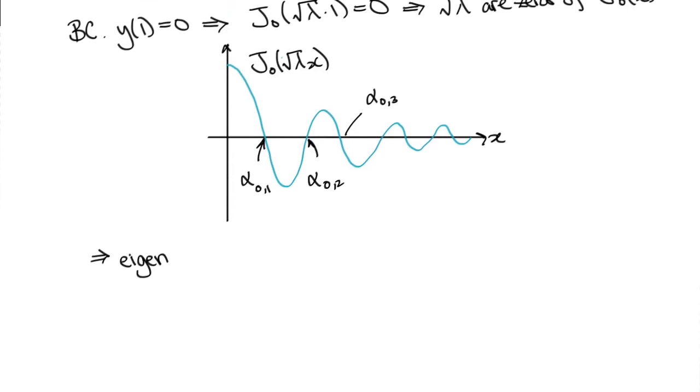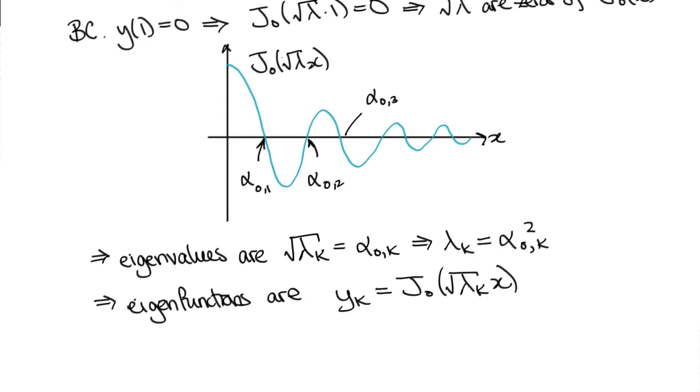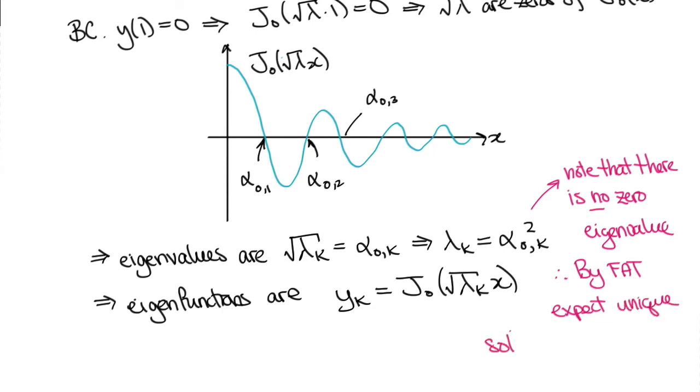Therefore, the answer to the question is that the eigenvalues are given by lambda k equal to alpha 0 k squared, and the eigenfunctions are yk equal to j0 of square root of lambda k times x. We can make one last remark that because the Bessel equation is non-zero at x equal to 0, then there must not be a 0 eigenvalue, and by the Fredholm alternative we'd expect a unique solution to the forced boundary value problem.